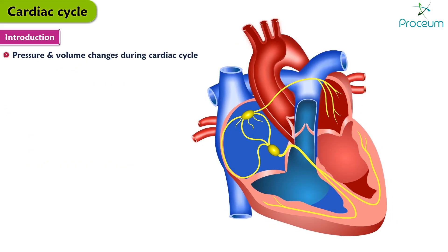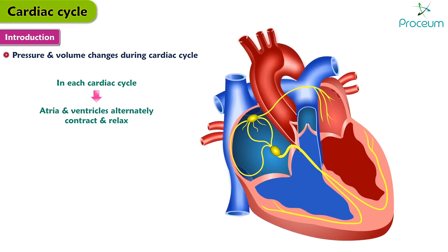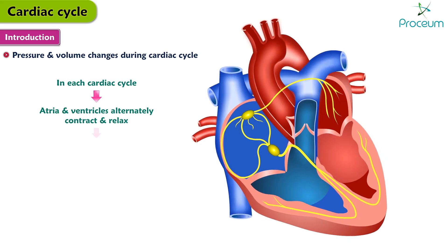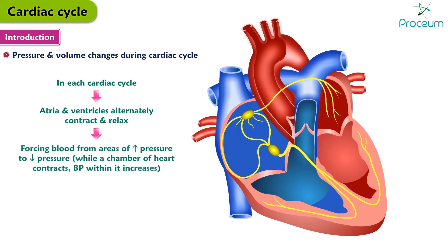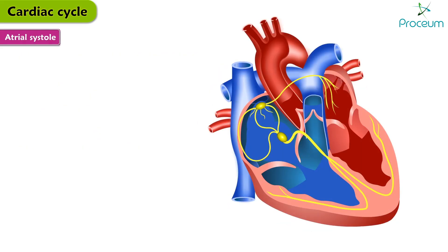Pressure and volume changes during the cardiac cycle. In each cardiac cycle, the atria and ventricles alternately contract and relax, thus forcing blood from areas of higher pressure to areas of lower pressure. While a chamber of the heart contracts, blood pressure within it increases.